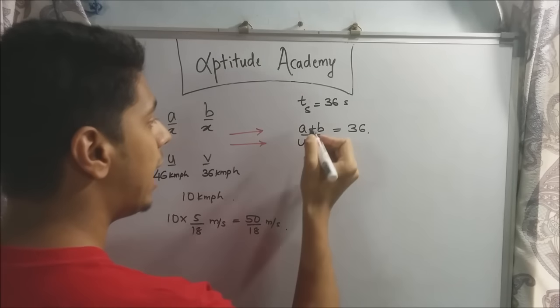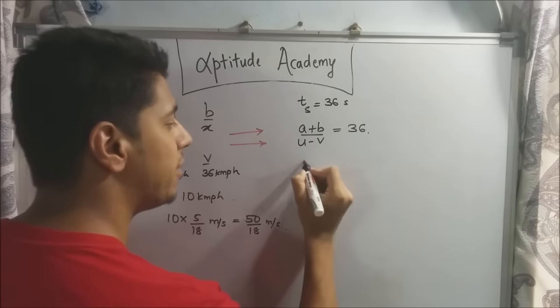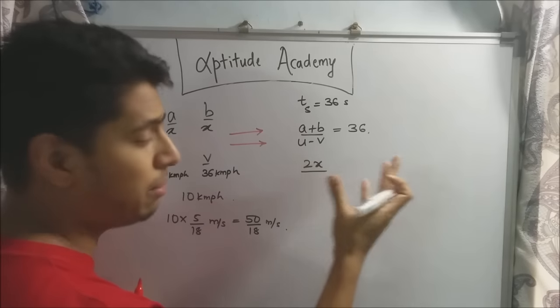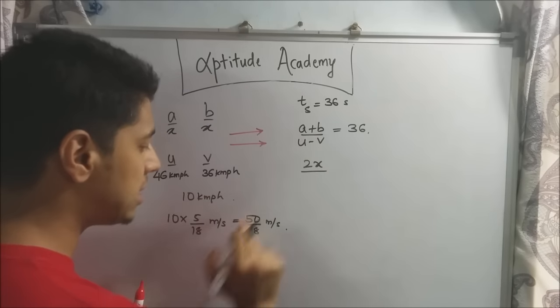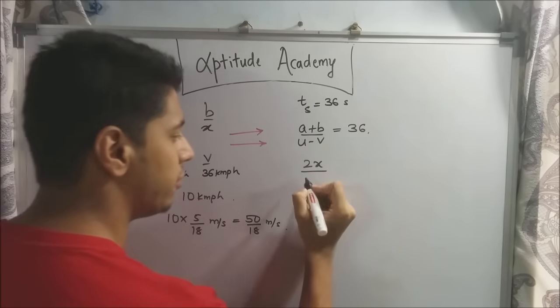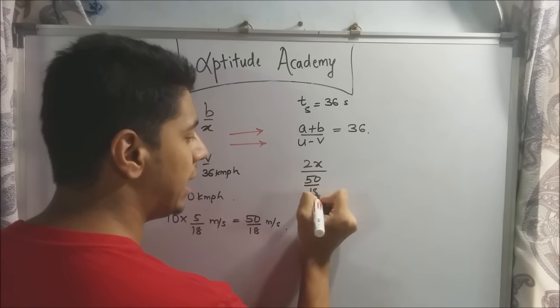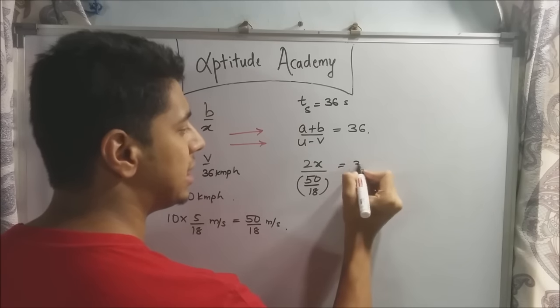Now, put it in this. A plus B is X plus X. So, you can give it as 2X. Now, as I said, you can give it X, A, B, C, whatever you want. U minus V is 50 by 18 meters per second. That's fine. Is equal to 36.